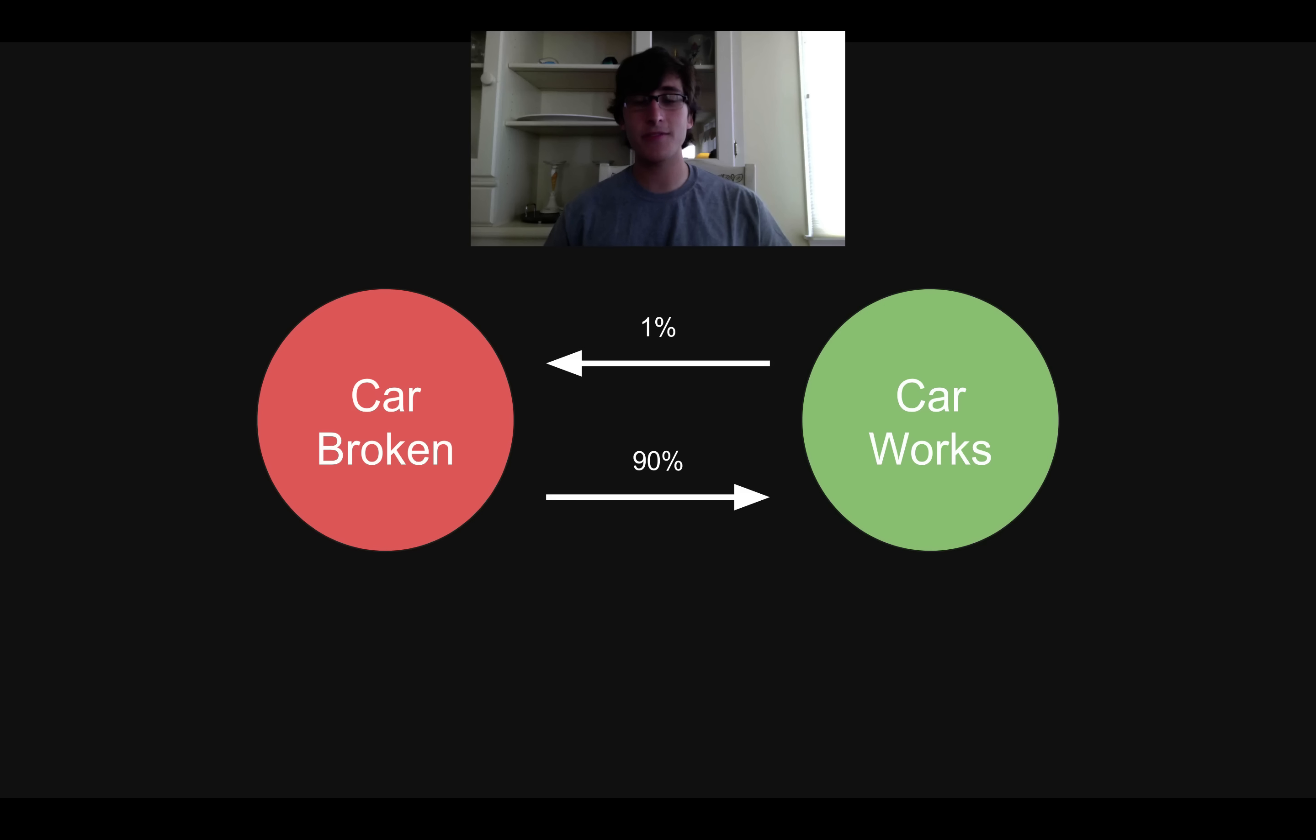And now there's a final piece of this picture, which is 99% of the time my car works, it will stay working. And 10% of the time my car is broken, it'll stay broken. So I can represent these just with arrows pointing into the same state that they come out of. So this is just an example of a Markov chain. Basically what we have is we have a bunch of states, in this case just two different states, either my car is functional or it's broken. And we have transitions between those states, the likelihood that you'll go from one state to another given state.